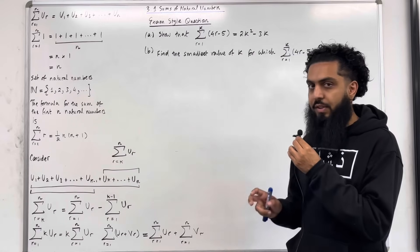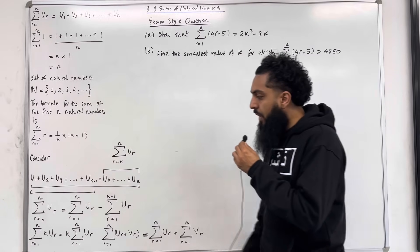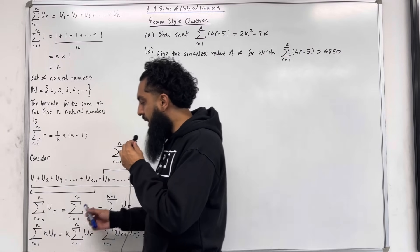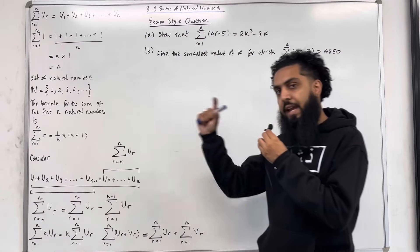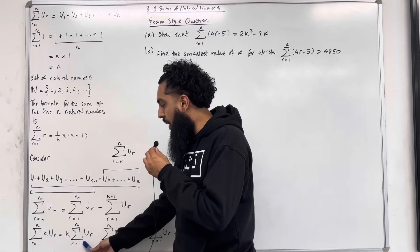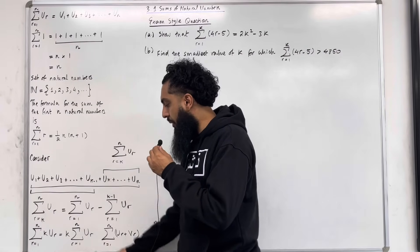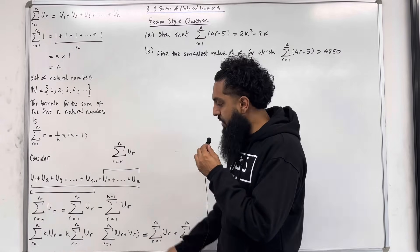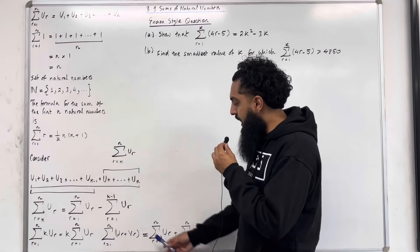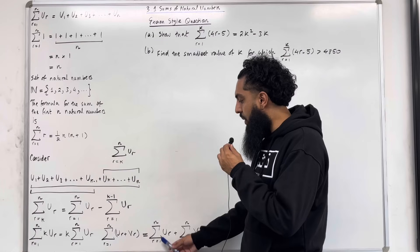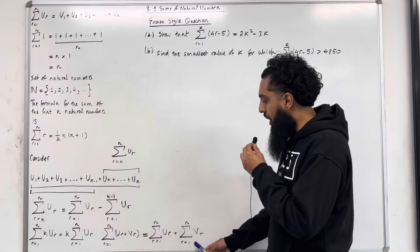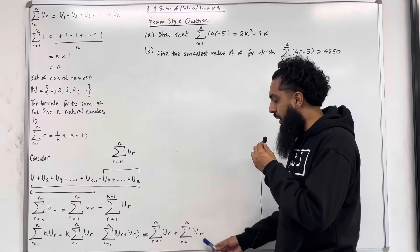Now let K be a constant. The summation from R equal 1 to N of K lots of U_R is equal to K taken outside the summation — so K lots of the sum from R equal 1 to N of U_R. The summation from R equal 1 to N of U_R plus V_R is equal to the summation from R equal 1 to N of U_R plus the summation from R equal 1 to N of V_R.